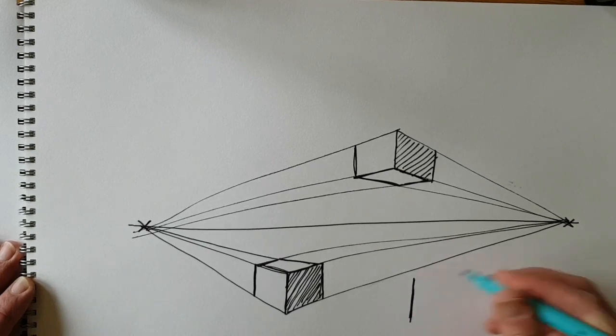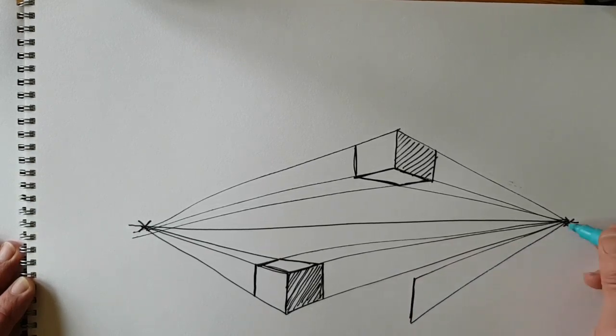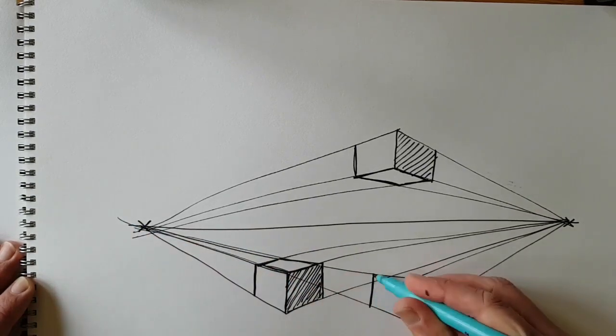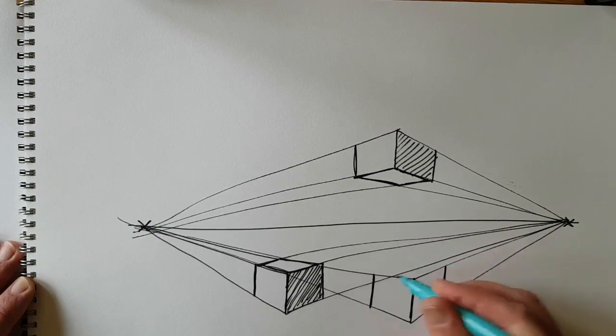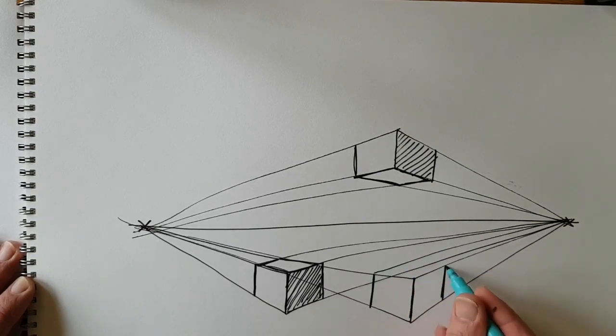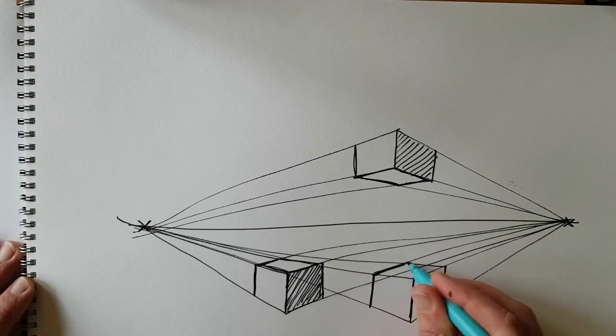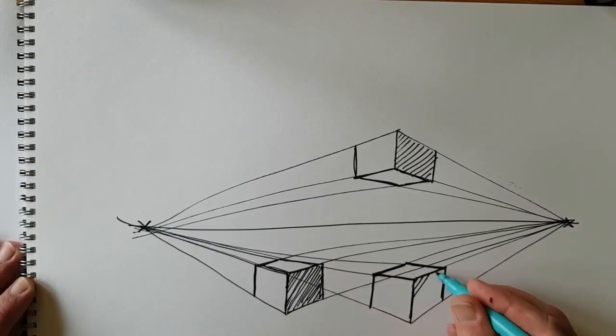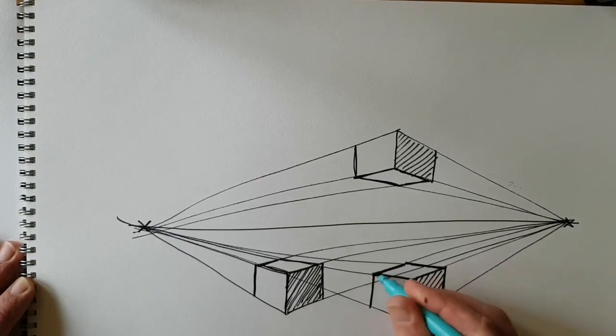So why don't you have a go at drawing loads of boxes different places on the page using two point perspective. Just keep them as boxes at the moment.